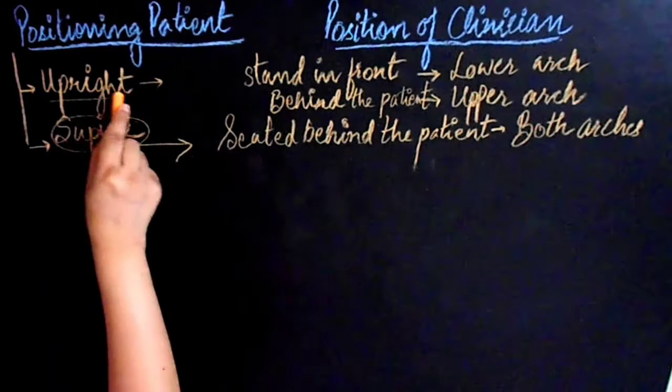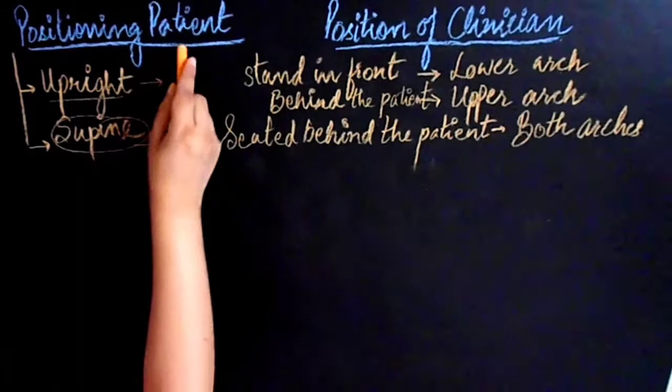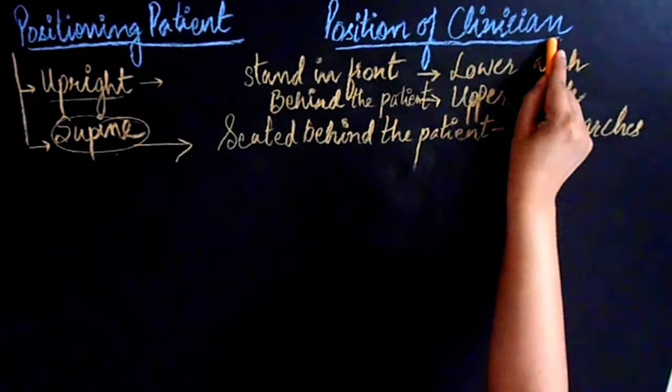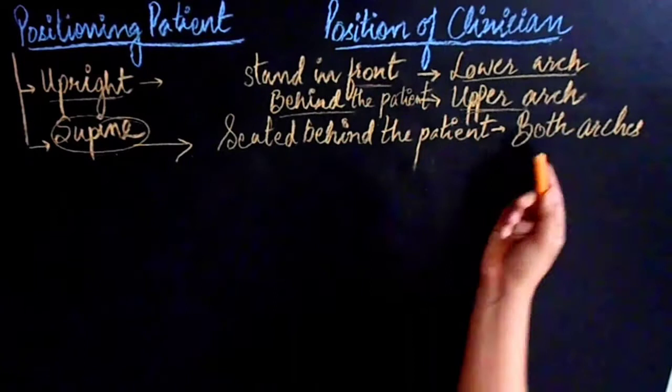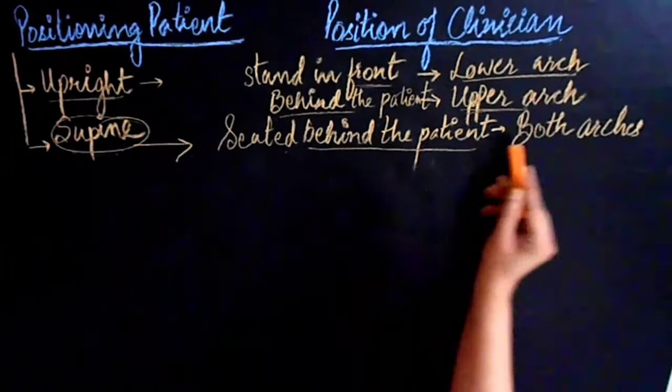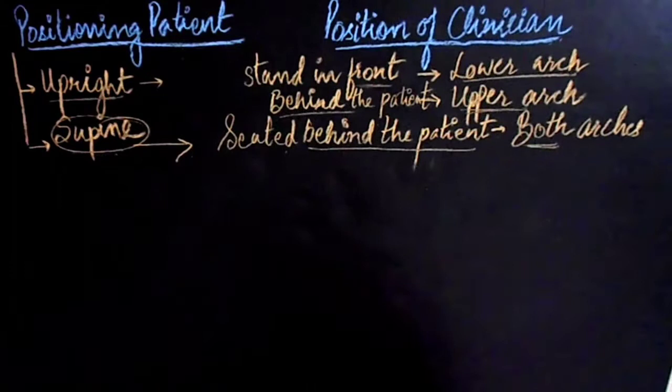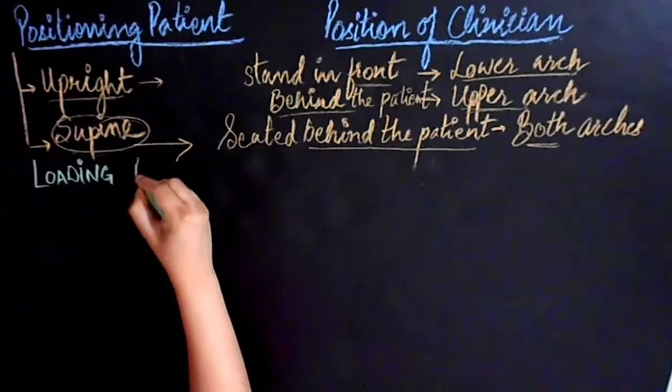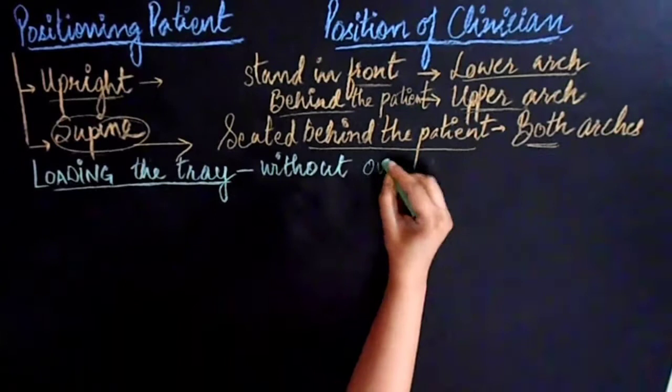Now I'll tell you about positioning of the patient and clinician. The patient is positioned either upright or supine. If the patient is upright, then the clinician stands in front of the patient for the lower arch and behind the patient for upper arch. If the patient position is supine, then the clinician should be seated behind the patient for both arches. Just make sure the chair is in correct position to prevent straining or overreaching.